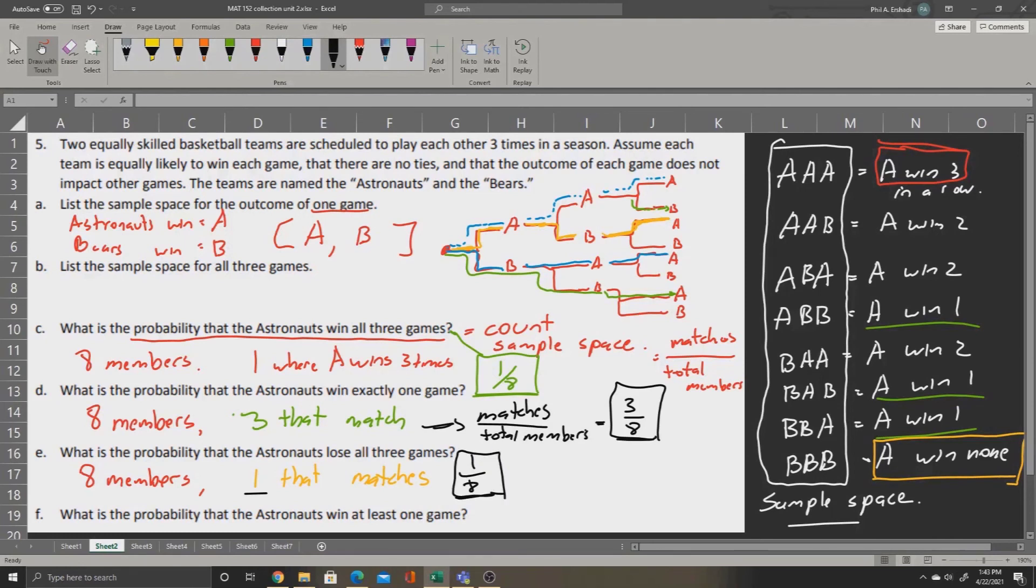For part F, what is the probability that the Astronauts win at least one game? So, can you see that we have, most of the time, the Astronauts will win at least one game? The only time when they don't is BBB. So now, here's what we can do. We can say that our probability of winning at least one game is one minus the probability of winning no games. Now that is going to be one minus one-eighth.